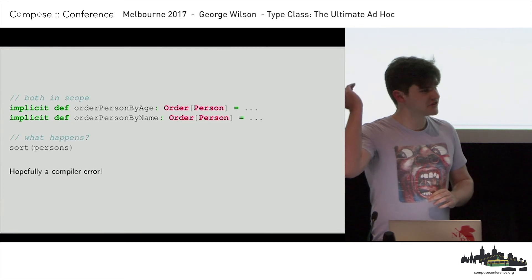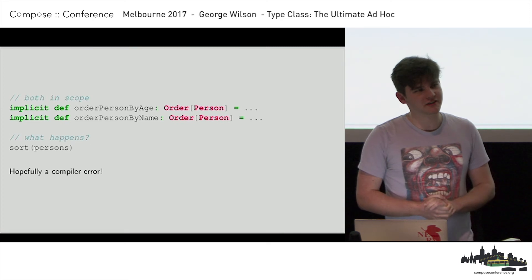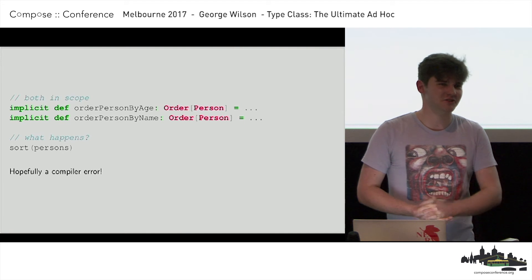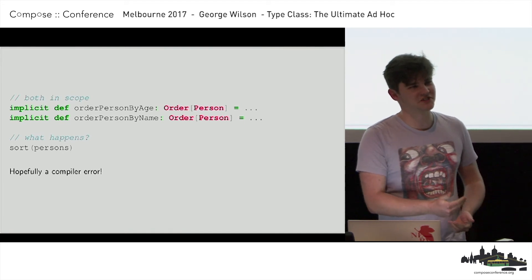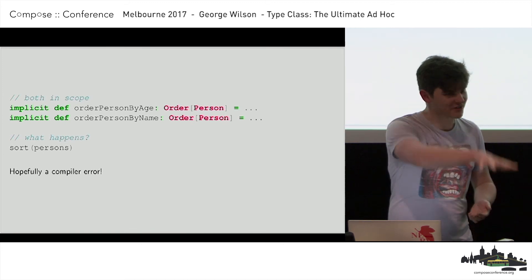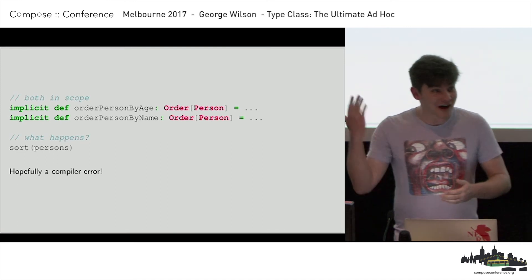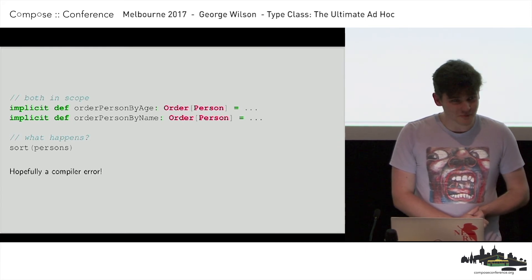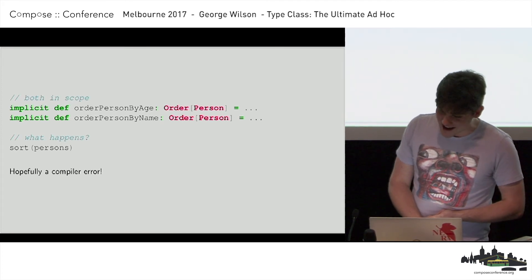If they were both defined right on top of each other and then we called it like that, that probably would be a compiler error. But I said they were in scope. Do you know which implicits are in scope? To answer that you would have to go through every one of your imports, go to those files, look at all the implicits they define, and look at everything they import. It's pretty hard — I don't have time to chase implicits all day. More importantly, we don't know how our persons are going to be sorted. Mr. Peterson might get really mad.